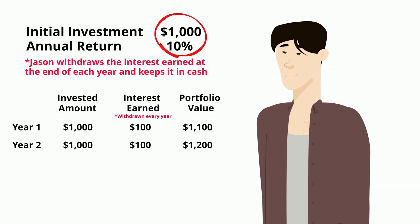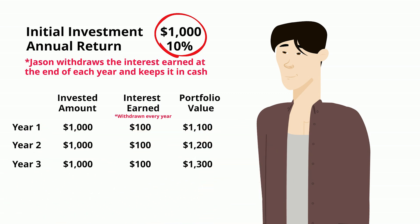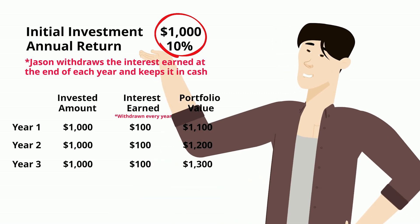This pattern continues, resulting in another $100 in interest after three years, growing his portfolio value to $1,300. Since Jason withdraws his interest each year, he earns 10% simple interest on his initial investment of $1,000.